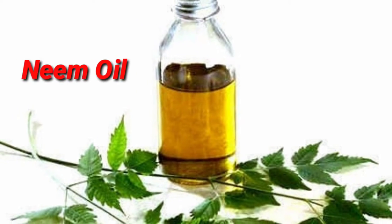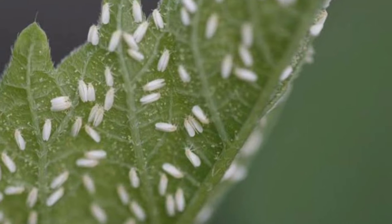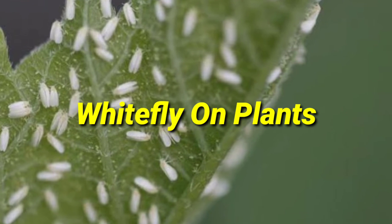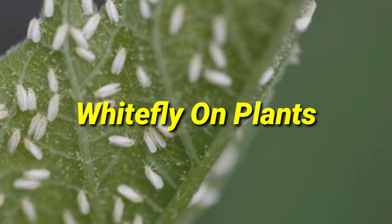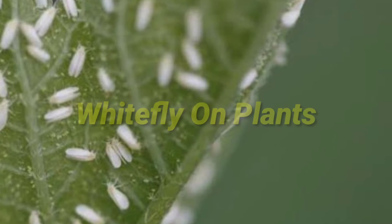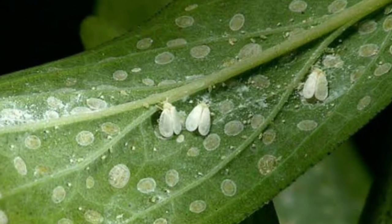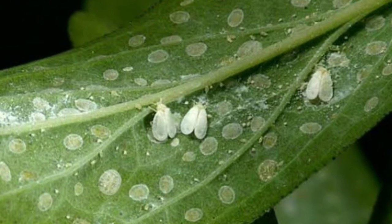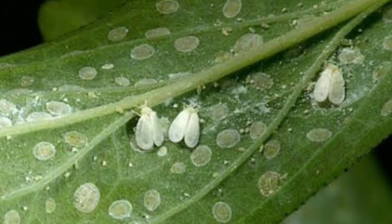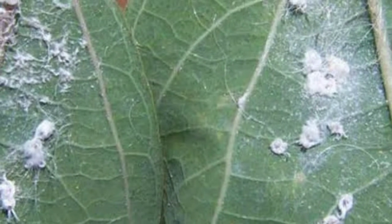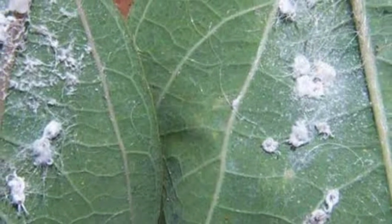The next common problem is whitefly on plants. These are soft-bodied winged insects closely related to aphids and mealybugs. They can be found in almost any region. Due to whitefly, plants become extremely weak, leaves turn pale or yellow, and growth will be stunted.